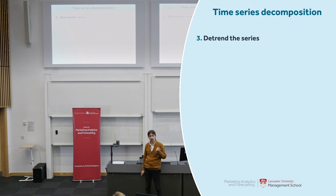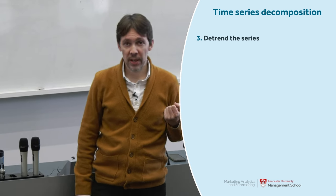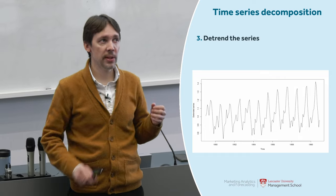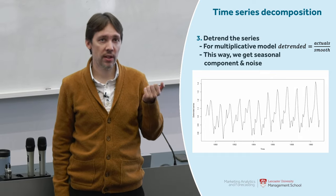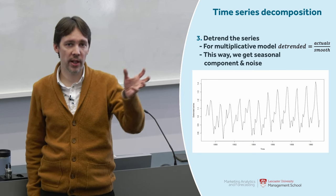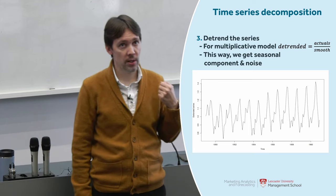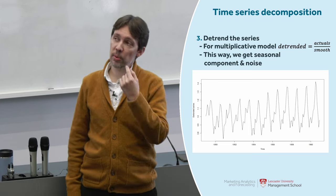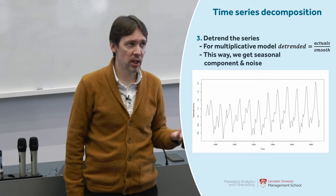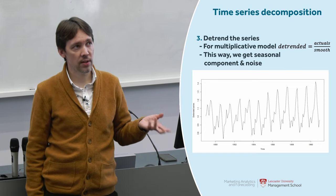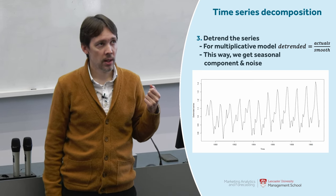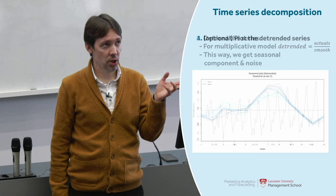The next step is to detrend the time series. Depending on the type of model assumed, you will have different formulas. Since we said it's multiplicative, the detrended time series is obtained by taking the actuals and dividing them by the smoothed values. Looking at the resulting plot, we don't have trend anymore, but we still have seasonality and a bit of noise.